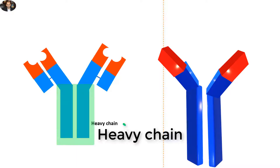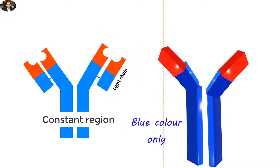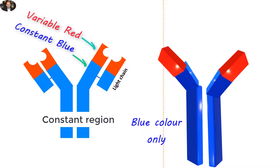The antibody is generally consisted of the heavy chain and the light chain. The heavy chain is always the constant region, whereas light chains are composed of both constant and variable regions.